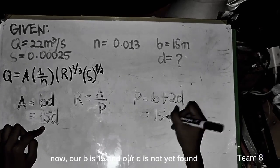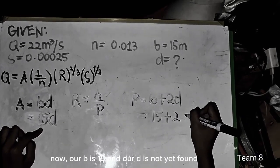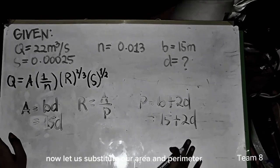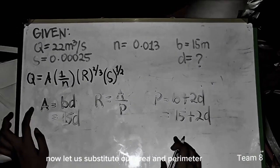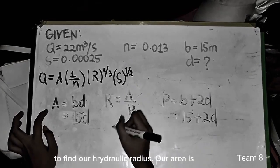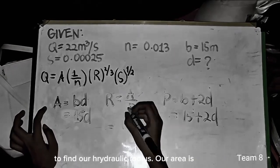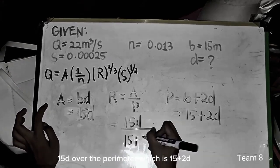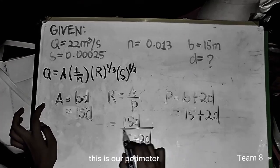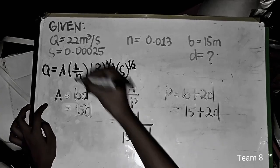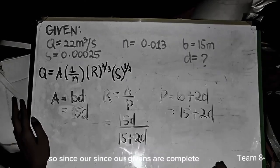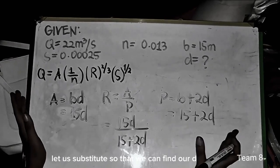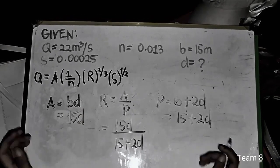Now, our B is 15 and our D is not yet found. Now, let us substitute our area and perimeter to find our hydraulic radius. And our area is 15D over the perimeter, which is 15 plus 2D. This is our perimeter. So since our givens are complete, let us substitute so that we can find our D.